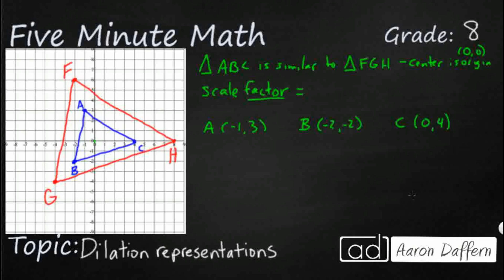That's the first triangle — the blue one. I'm going to put the corresponding points right underneath them, and you'll hopefully see the scale factor. It shows a very simple one here for demonstration purposes, but typically they're a little more complex. F is (-2, 6), G is (-4, -4), and H is (0, 8). If you look from one to the other, you'll notice you double everything — you multiply by 2.